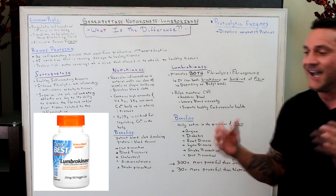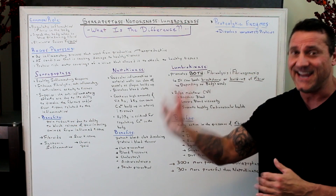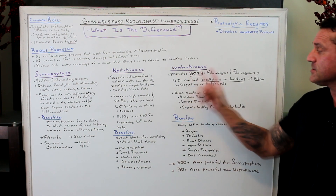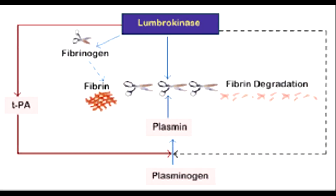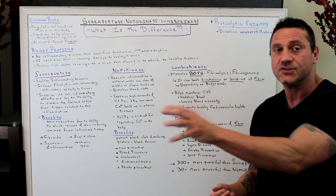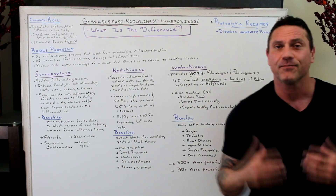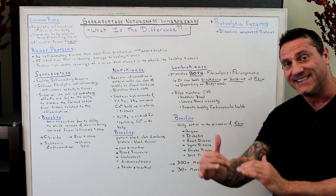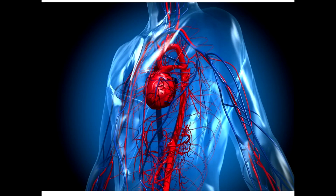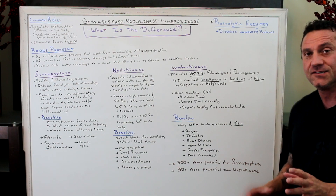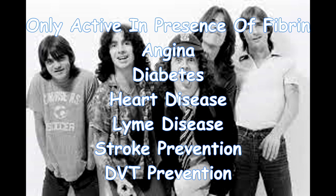Lumbrokinase — when I did the research, I don't understand why they don't use this more, because it's nature's natural blood thinner and they've been using it in other cultures forever. It promotes both fibrinolysis and fibrinogenesis, meaning it can both break down and build up fibrin. When fibrin is present it breaks it down, and when it's gone the mechanism stops. This prevents hemorrhaging — it depends on the body's needs. It lowers blood viscosity, supports healthy cardiovascular health, and is only active in the presence of fibrin, giving it its own built-in stopping mechanism.